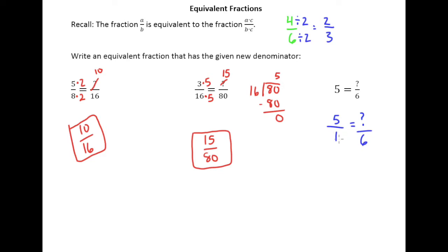To answer the question, 1 times what equals 6? That's a pretty easy question to answer. 1 times 6 equals 6. So that must mean I need to multiply 5 by 6 as well. So this question mark is really the number 30.